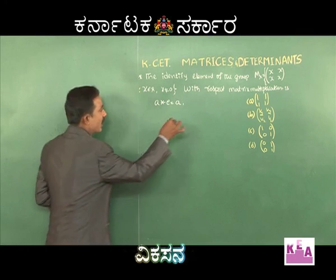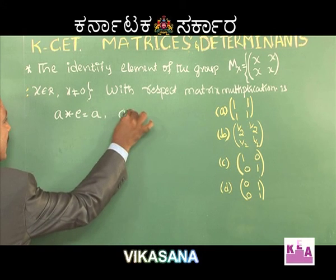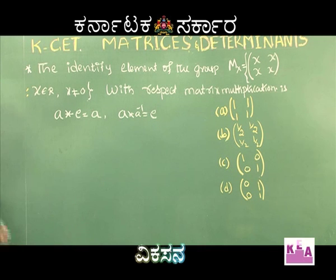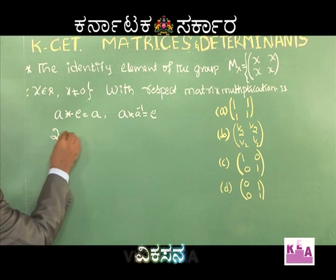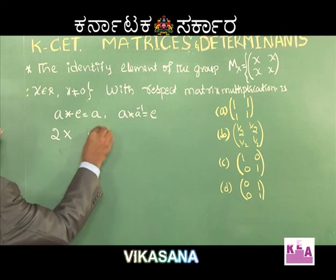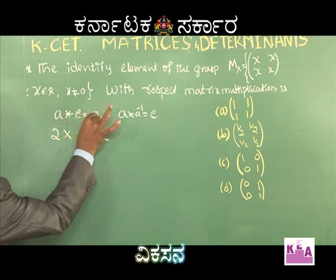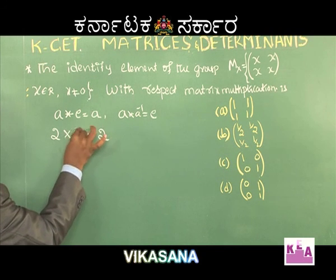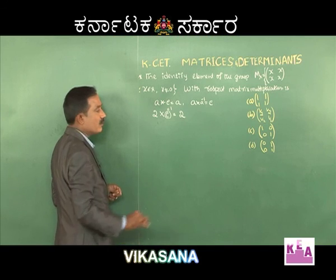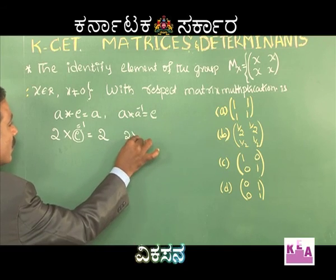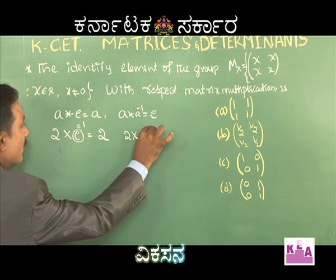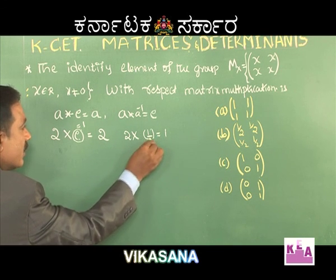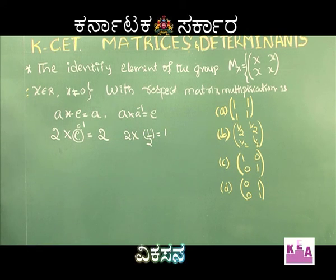Let's talk about identity and inverse. Inverse means a into its inverse should be equal to the identity element. For example, consider the number 2 with respect to multiplication: 2 star e = 2, so e must equal 1. Similarly, the inverse of 2 with respect to multiplication should equal the identity element 1. Therefore, 2 into 1/2 is 1, so the inverse of 2 is 1/2. In the case of a matrix, the identity matrix is given.